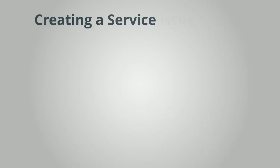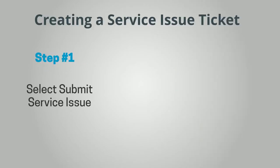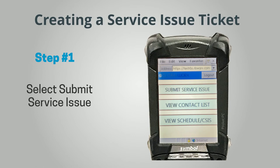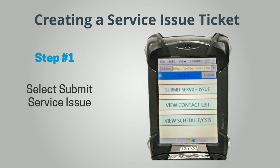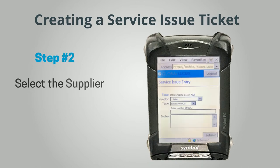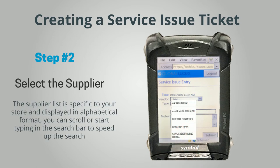Creating a Service Issue Ticket. Step 1: Select Submit Service Issue from the main menu. Step 2: Select the Supplier. The supplier list is specific to your store and displayed in alphabetical format. You can scroll or start typing in the search bar to speed up the search.